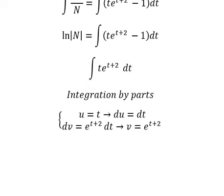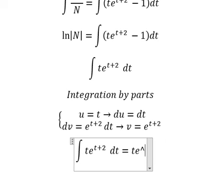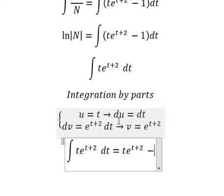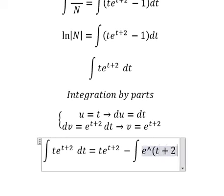We have u multiply by v, so we have like this minus the integration, u multiply by v. So we have the integration e to the power of t plus 2.